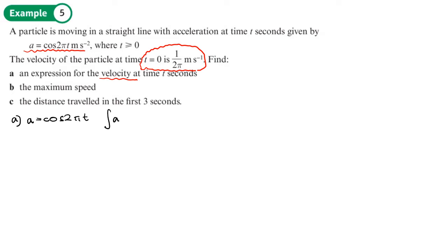If we integrate the acceleration with respect to t, that gives us the velocity. To integrate cos(2πt) we use the reverse chain rule, because the inside of the bracket is linear. We integrate the outside — cos becomes sine — the inside doesn't change, and we divide by the derivative of the inside, which is 2π. So we get sine(2πt) divided by 2π, plus c.